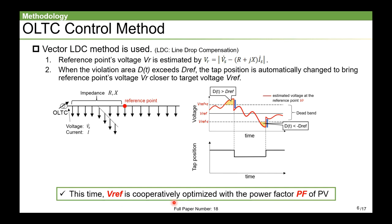In this slide, I want to explain vector-LDC control method that we adopted as the control method for OLTC. In this method, the voltage of the reference point Vr is estimated by this equation. And then, when the area of violation from Vref plus minus epsilon exceeds the Dref like this, the tap operates to bring Vr closer to Vref. There are many parameters in the vector-LDC method, but in this study, we will optimize Vref with the power factor PF of PV inverters.